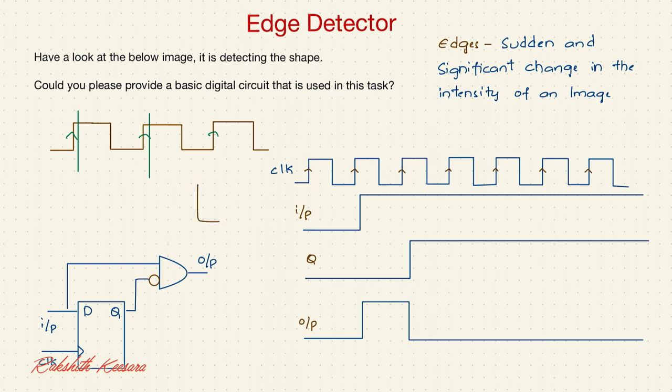So let us say this is the D flip flop. And this is the clock. And this is our input. This is the Q, right?